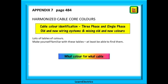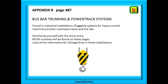Appendix 7 contains several tables that list different cable colour schemes in use today and also the old colour schemes. The cable colours we use now are called the harmonised colours — a harmonised standard across Europe. Cable colours are very likely to come up as an exam question. Appendix 8 looks at bus bar trunking systems and power track systems. Occasionally a question will come up, so make sure you know where the BS EN numbers are on this page and also check out the short paragraph on voltage drop for bus bar systems.